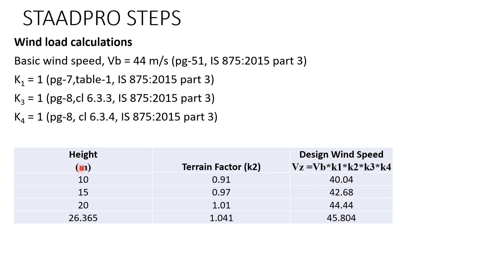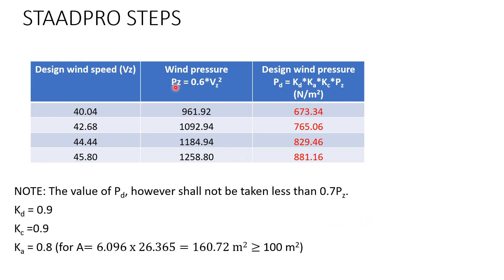Since K2 varies with height, the Vz value will be different at different heights of the structure. Vz = VB × K1 × K2 × K3 × K4, where K1, K3, and K4 are all 1, and K2 is 0.91 for 10 meters. The final Vz values are shown in the last column. Once Vz is calculated, Pz = 0.6 × Vz² gives the wind pressure at height Z. Then the designed wind pressure is Pd = Kd × Ka × Kc × Pz, with the condition that Pd should not be less than 0.7 × Pz.